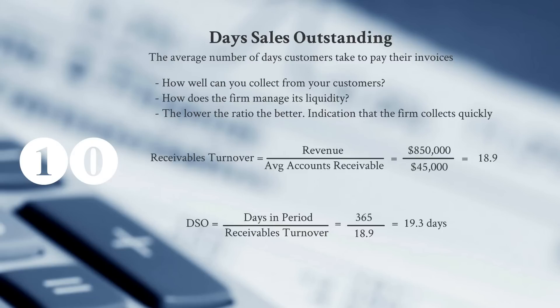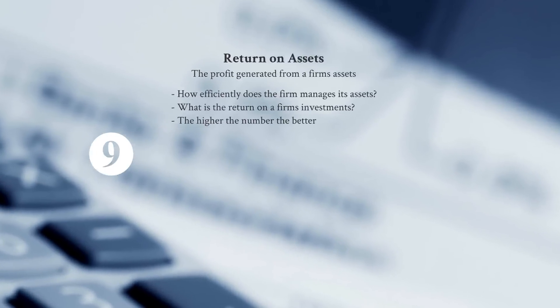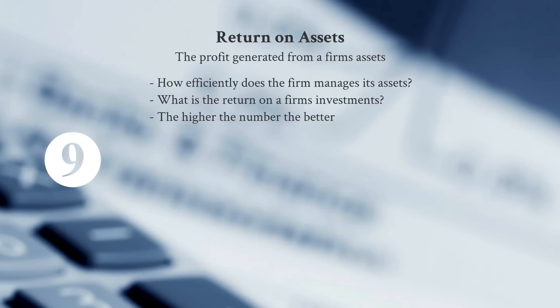Days Sales Outstanding can also be calculated by taking accounts receivable divided by net credit sales — which must be tracked separately in our financial statements — and multiplying by 365. Either method should give the same answer.